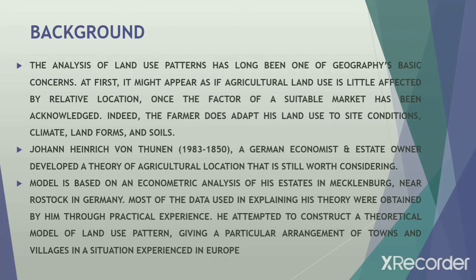The most famous theory for determining the land use of a region is the agricultural location theory of Von Thünen. Johann Heinrich Von Thünen presented this model to explain the agricultural location of a region and the reasons for such agricultural activities. Thünen lived in Germany from 1783 to 1850, and his theory was partially based on the work of economist Adam Smith and partially on his experience of running his own farm estate at Mecklenburg. He attempted to construct a theoretical model of land use patterns giving a particular arrangement of towns and villages in a situation experienced in then-Europe.